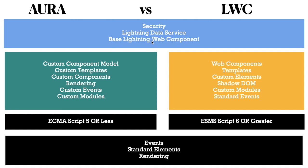On the left we have Aura components, on the right we have Lightning Web Components. Both use the same common frameworks: security, Lightning Data Services, and base Lightning Web Components. However, in Aura components we have more frameworks - a custom component model, custom templates that we cannot create ourselves (we have to follow Aura's framework), and custom Aura components.